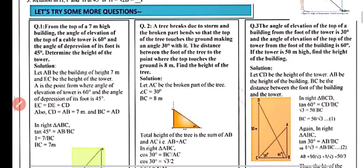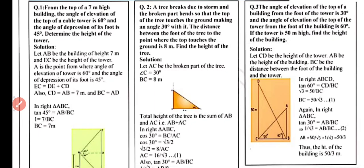Question 3: The angle of elevation of the top of a building from the foot of a tower is 30° and the angle of elevation of the top of the tower from the foot of the building is 60°. If the tower is 50 meters high, find the height of the building.